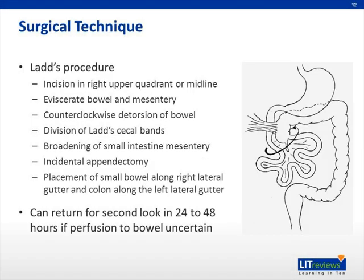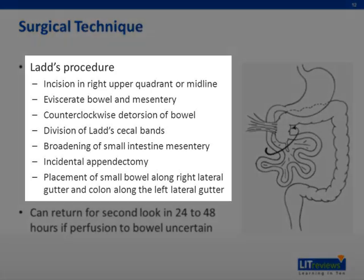This slide reviews the surgical technique. The procedure typically performed is known as a Ladd's procedure. To perform this procedure, an incision is first made in the right upper quadrant or midline. The bowel is then eviscerated or removed from the abdominal wall cavity and mesentery. A counterclockwise detorsion of bowel is performed. One then divides the Ladd's cecal bands, broadening the small intestine mesentery. An incidental appendectomy is also performed.